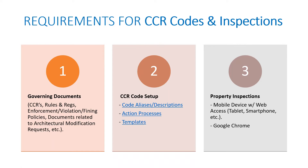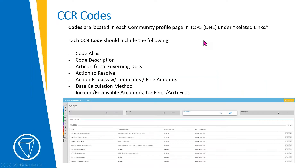The requirements for property inspections — we'll get more into that on Thursday's webinar — but the only requirements for conducting property inspections with TOPS One is a mobile device with web access, such as a tablet or smartphone. Google Chrome is the best browser. You can use Safari and others, but you'll likely have some performance issues, so always use Chrome. We will go through this PowerPoint presentation and then I'll show you a live demo at the end.